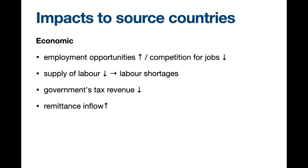For impact to the destination country, positives and negatives are roughly half and half — they're kind of equal, with a few of each. But for the impact on the source country, most of the impact would tend to be negative. Economic impact comes first, because most of the time we're talking about economic voluntary migration.